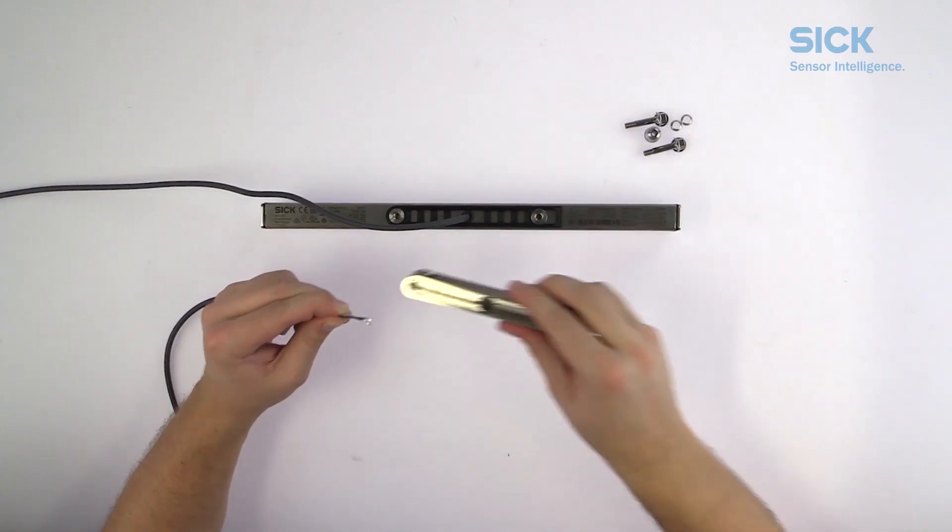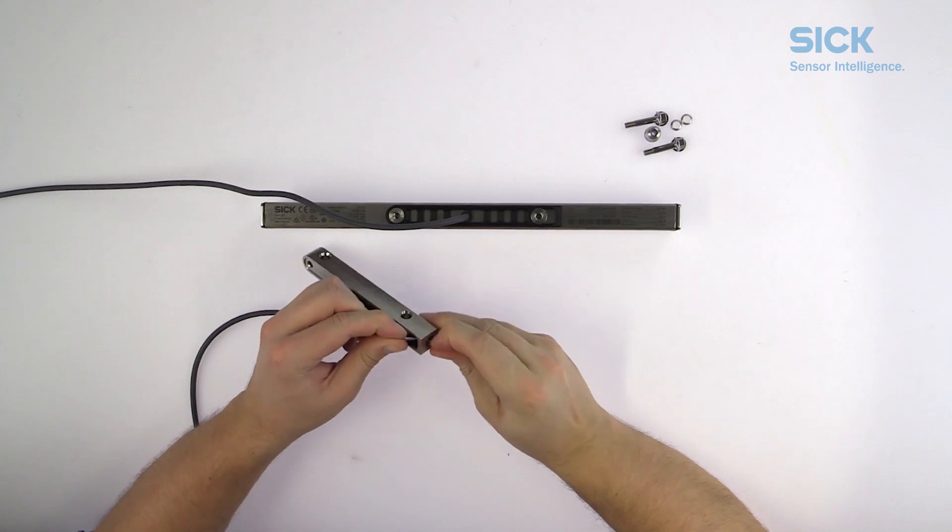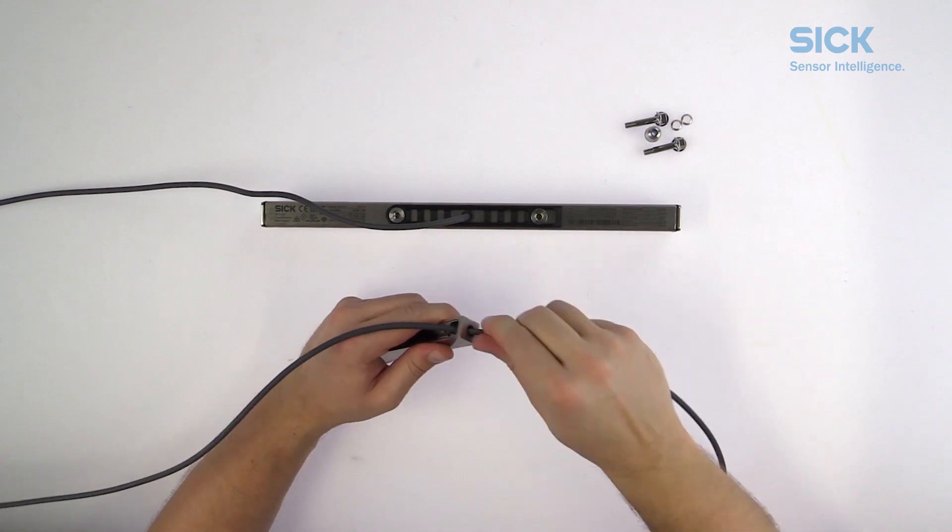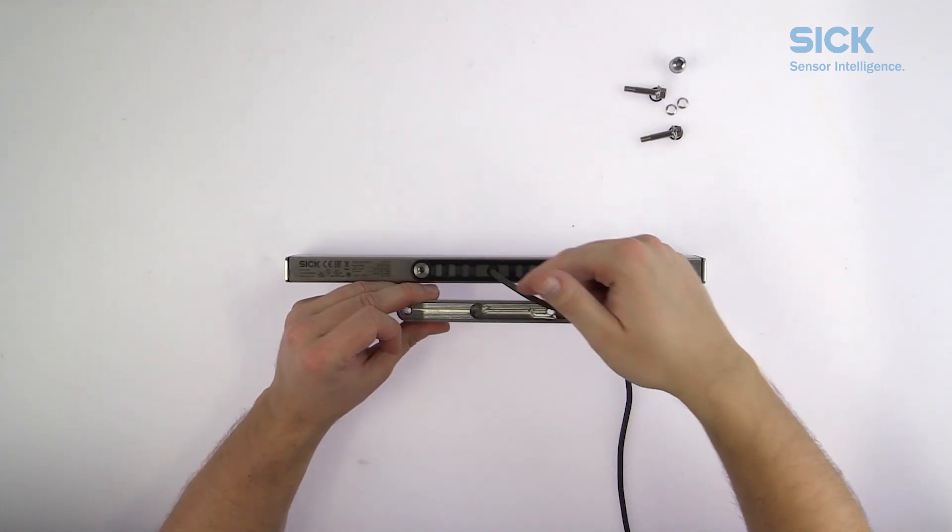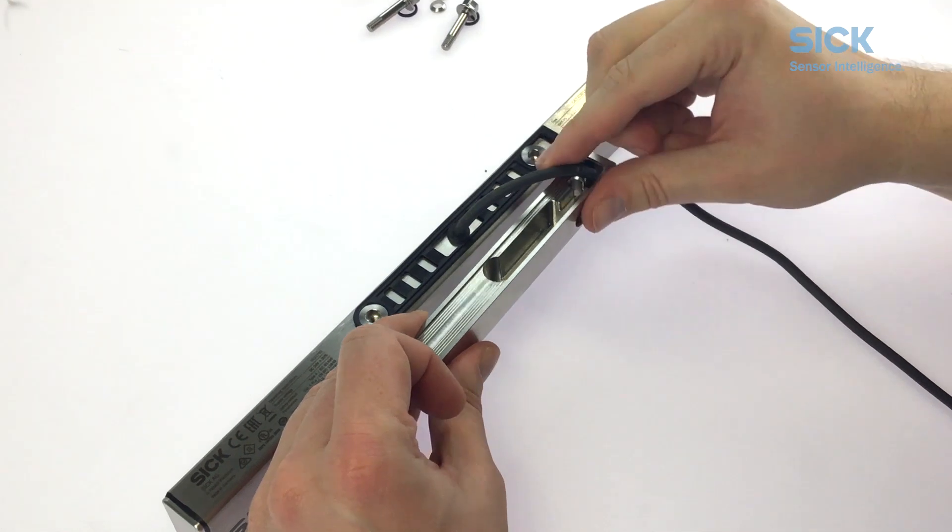Now feed the cable through the bracket case like this. Clamp the cable into the strain relief in the bracket case so that there is still room enough for a little loop.